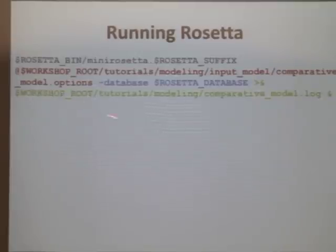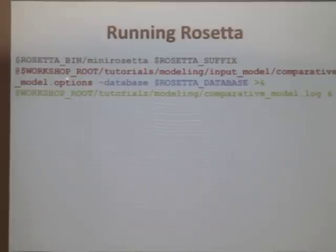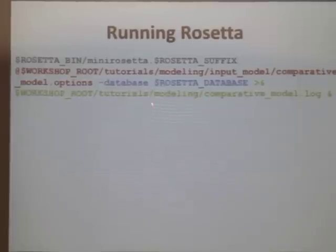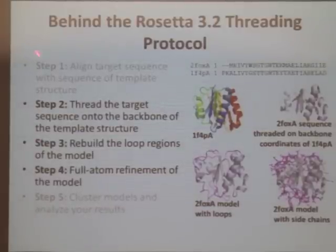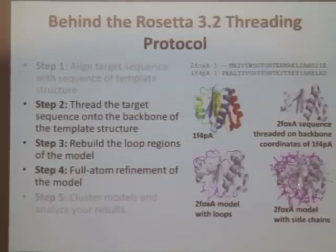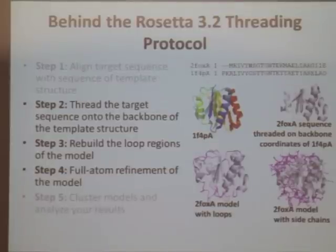Then you run Rosetta. A couple of people had trouble running the command line, so: you specify the name of your application — in this case it's going to be mini Rosetta. You put an at symbol and then specify the name and path of your options file. You specify the database path using the environment variable. When you run this command, Rosetta does three steps for you: threading, rebuilding the loops, and doing the full-atom refinement — all in one step for each structure you want to build. This is an improvement in the release; previously these steps had to be done separately.